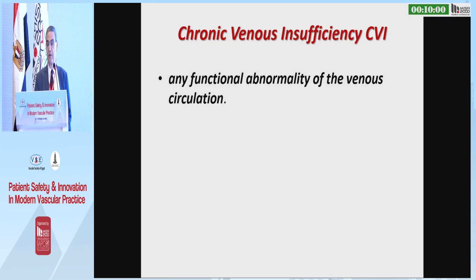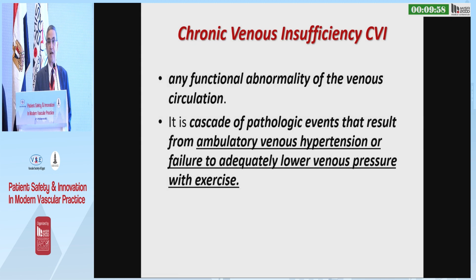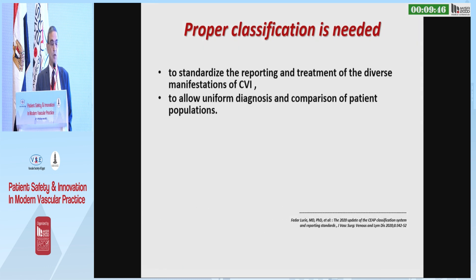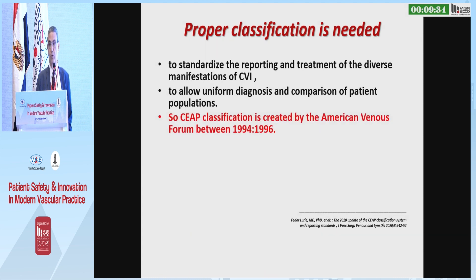Dear colleagues, chronic venous insufficiency by definition is any functional abnormality of venous circulation. It is a cascade of pathological events that result from ambulatory venous hypertension when the venous patient is exercised. Proper classification is needed to standardize the reporting and treatment of the various manifestations of CVI, allowing reform diagnosis and comparison of patient populations.